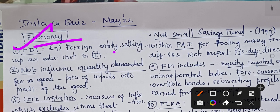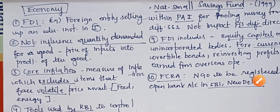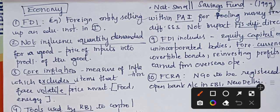The next fact is about what does not influence the quantity demanded for a good. For example, the price of input into the production of a good — the input cost will not determine the quantity of the product demanded.